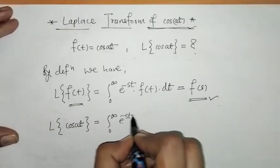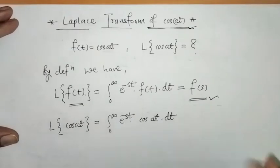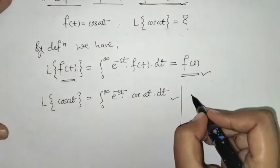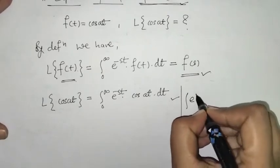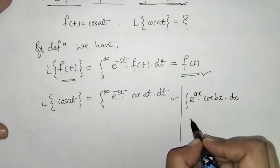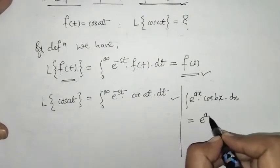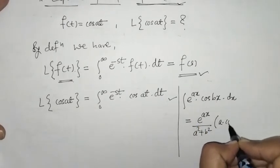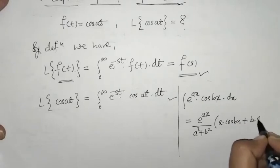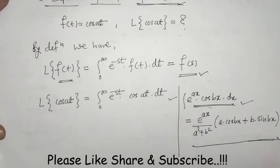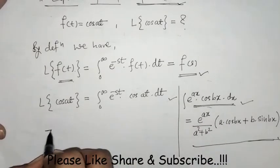Now we have to find the Laplace of cos(at), so we put f(t) = cos(at). We can check that this integral is of the standard form: the integral of e raised to a·x times cos(b·x), where a and b are constants. The result for this standard integral is e raised to a·x divided by (a² + b²), times the bracket: a·cos(b·x) + b·sin(b·x). We use this result here, as seen in previous lectures.